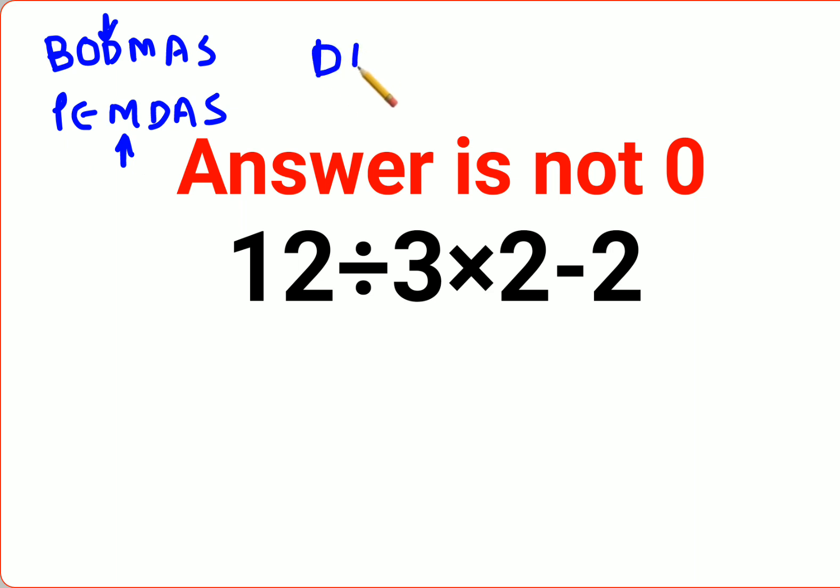But actually, division and multiplication have to be done together, or rather they hold equal importance. So in that case when you have a division as well as multiplication, you just need to go from left to right. Whatever comes first from your left hand side has to be done first.